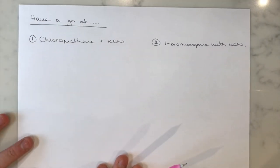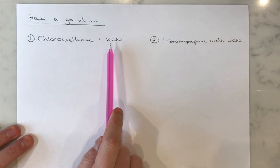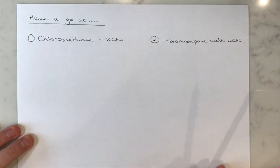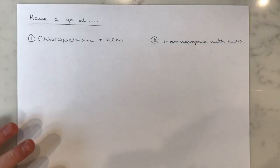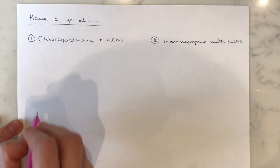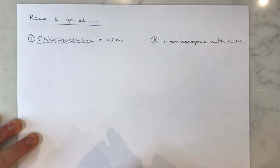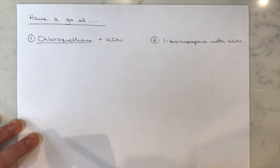Have a go at the following two examples: chloromethane reacting with potassium cyanide, and 1-bromopropane reacting with potassium cyanide. Pause the video and draw out the full mechanism for those two. Always take care to make sure you're starting off with the right reagent — people often lose marks in an exam when they've drawn a perfectly correct curly arrow mechanism but done it on the wrong molecule.